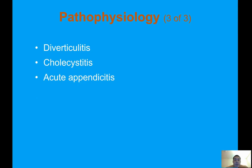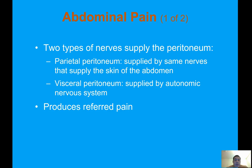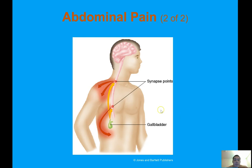Other problems in the abdominal cavity include diverticulitis, cholecystitis, and acute appendicitis. Two types of nerves supply the peritoneum: the parietal peritoneum is supplied by the same nerves that supply the skin of the abdomen, while the visceral peritoneum is supplied by the autonomic nervous system, which produces referred pain. For example, pain felt in the shoulder may actually be referred from an issue with the stomach or gallbladder.